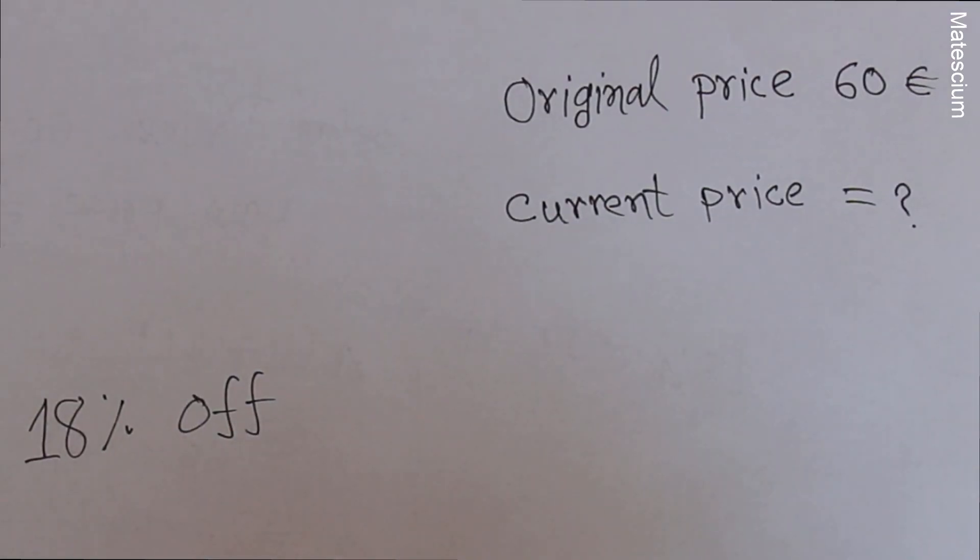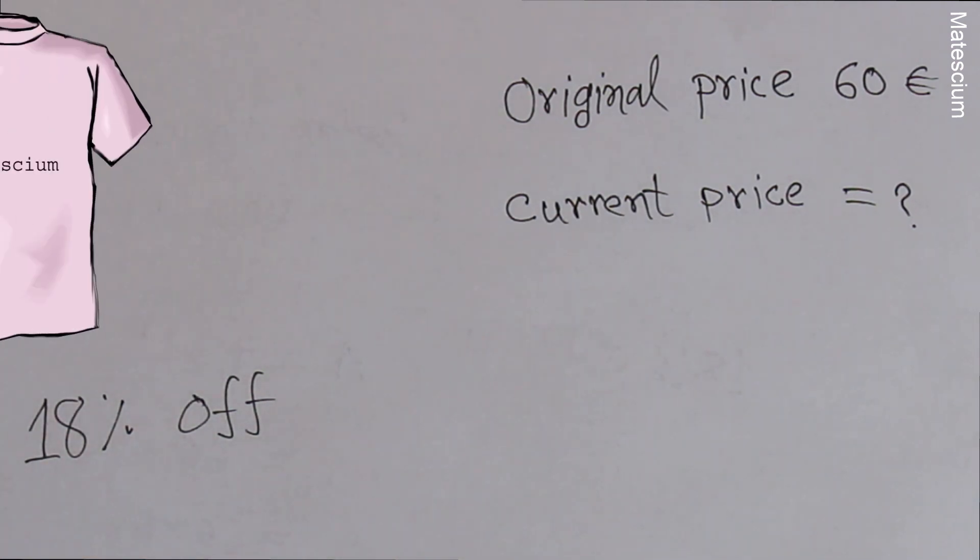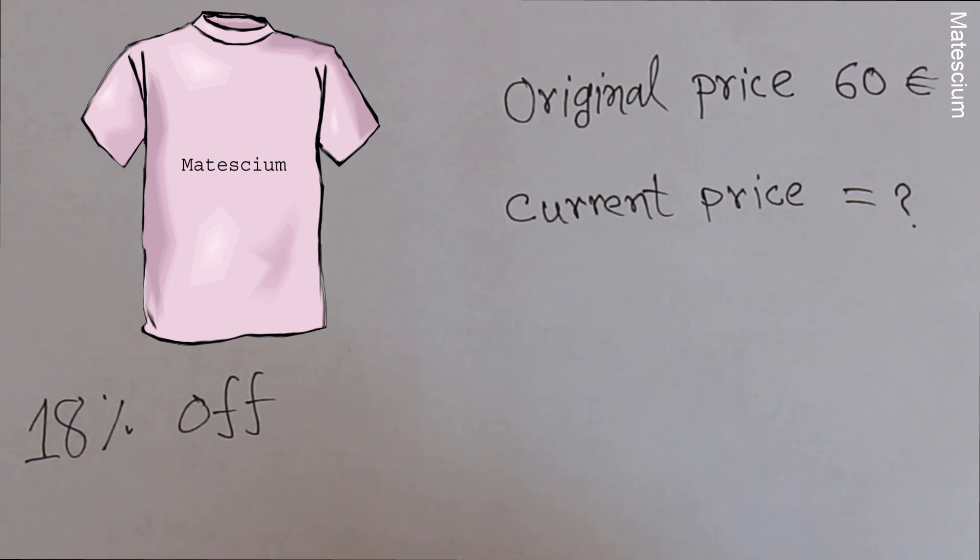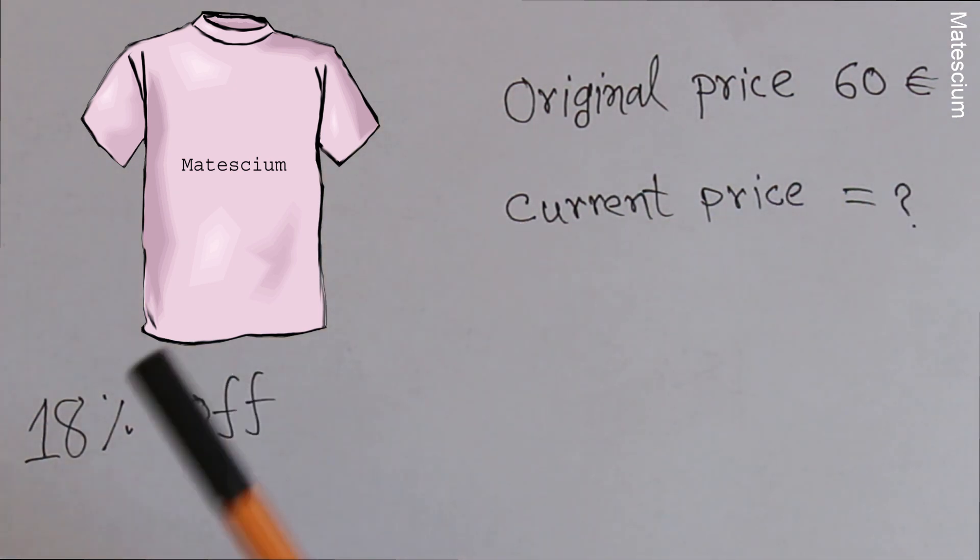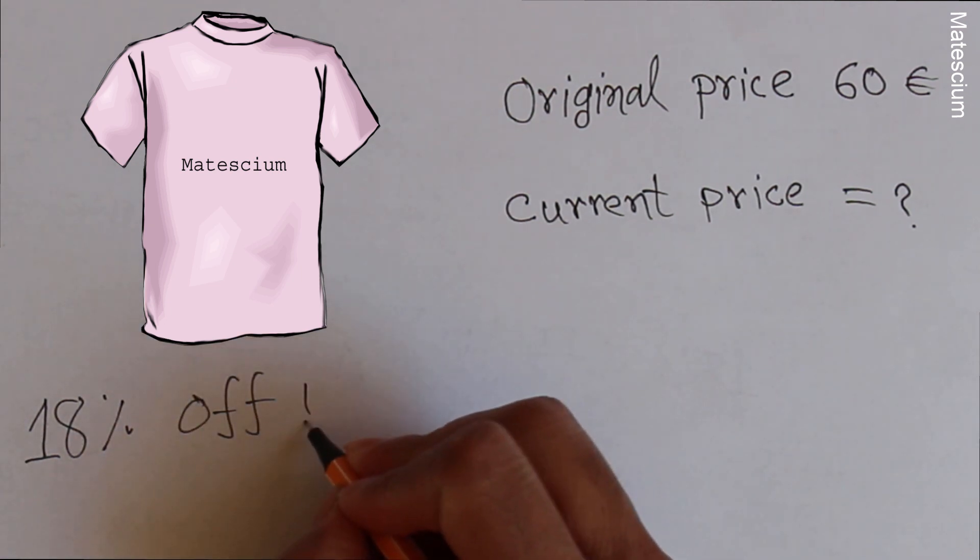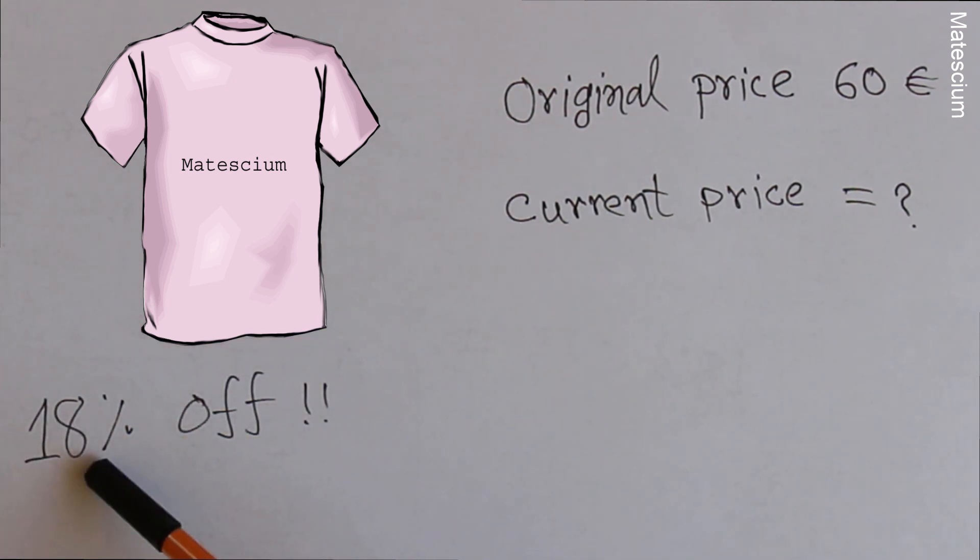Well, let's do some more exercises that are related with our practical life. This is a t-shirt and original price of this t-shirt is 60 euros. But this company is giving 18% off from its original price. So after this 18% reduction, what's the final price? That is the question.